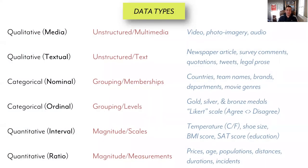To begin with, let's just step back and think about the different types of data that we might ever encounter or work with. This is a taxonomy that I often use to get a sense of the range of different data types that I have potentially to work with and to analyze. This taxonomy comes from social science, more so than perhaps database thinking. As you can see, there are three distinct major groups, and then within those, subtle distinctions in classifications.